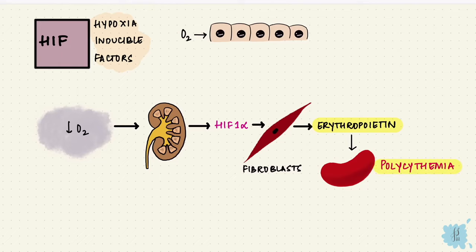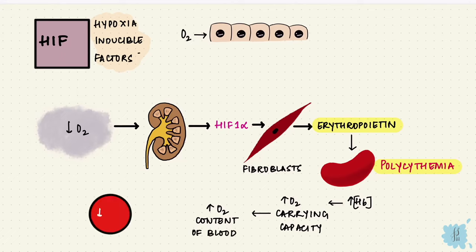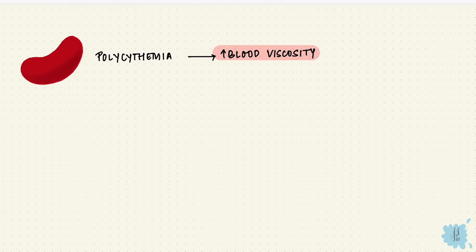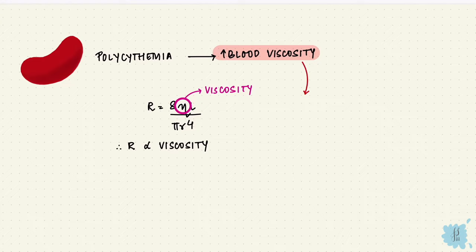So there's increased hemoglobin concentration, which increases the oxygen carrying capacity and therefore the oxygen content of blood. So there's a low arterial partial pressure of oxygen, but there's a high oxygen content of blood. This helps the tissues get oxygen, but it also increases blood viscosity. If you recall, resistance is 8 eta L over pi r to the power of 4, where eta is the viscosity. So resistance is proportional to viscosity and high blood viscosity means there's a high pulmonary vascular resistance and high pulmonary arterial pressure.